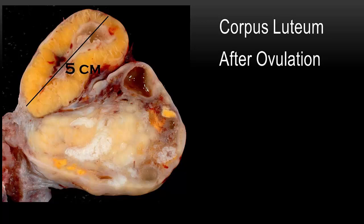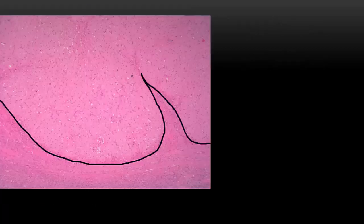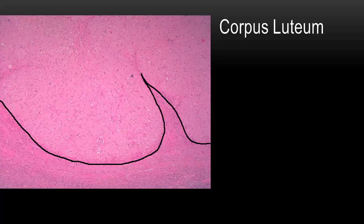Let's take a look at the histology of the corpus luteum. Here we see that histology — this is the corpus luteum inside the ovary after ovulation. The part at the top of the slide above the dark line is the corpus luteum.